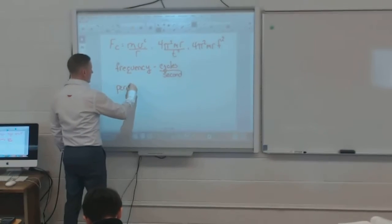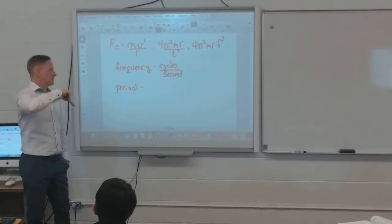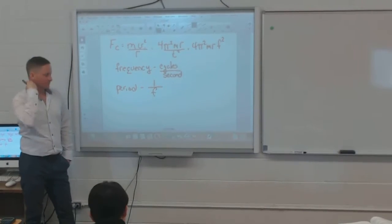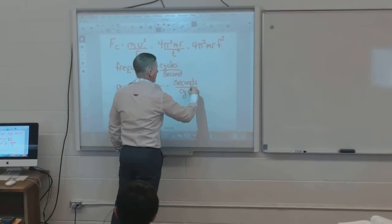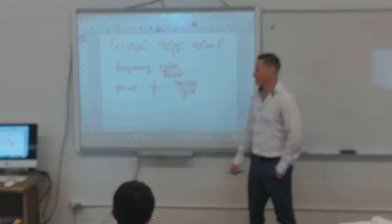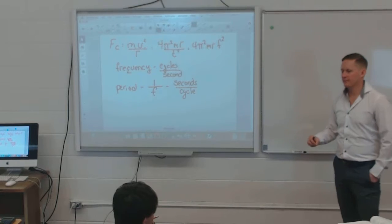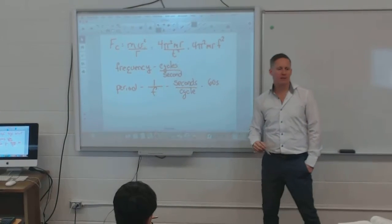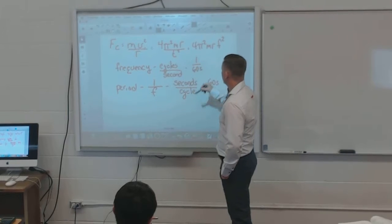Period is how long it takes for something to go back to where it started. Period is one over the frequency — it's the reciprocal of frequency. How many seconds does it take to complete one cycle? Look at the second hand on a clock: it takes 60 seconds to complete one cycle — that's your period. Your frequency would be one-sixtieth of a cycle per second.